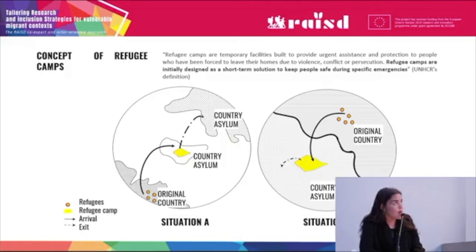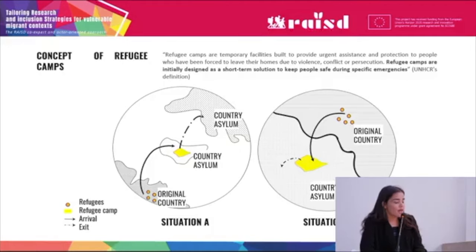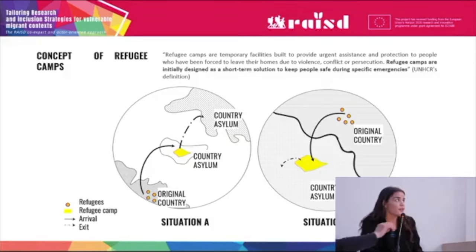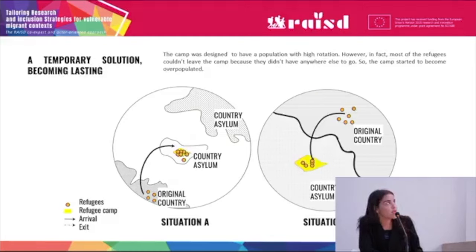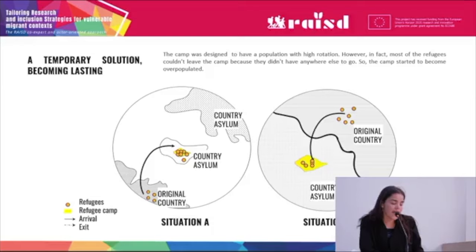Here we can see the prior definition of a camp. Refugee camps are initially designed as a short-term solution to keep people safe during a specific emergency. This diagram shows what a camp is supposed to operate at — the height of the highest population rotation. However, a temporary solution became long-term. Most of the refugees could not leave the camp because they didn't have anywhere else to go, so the camp started to become over-populated.